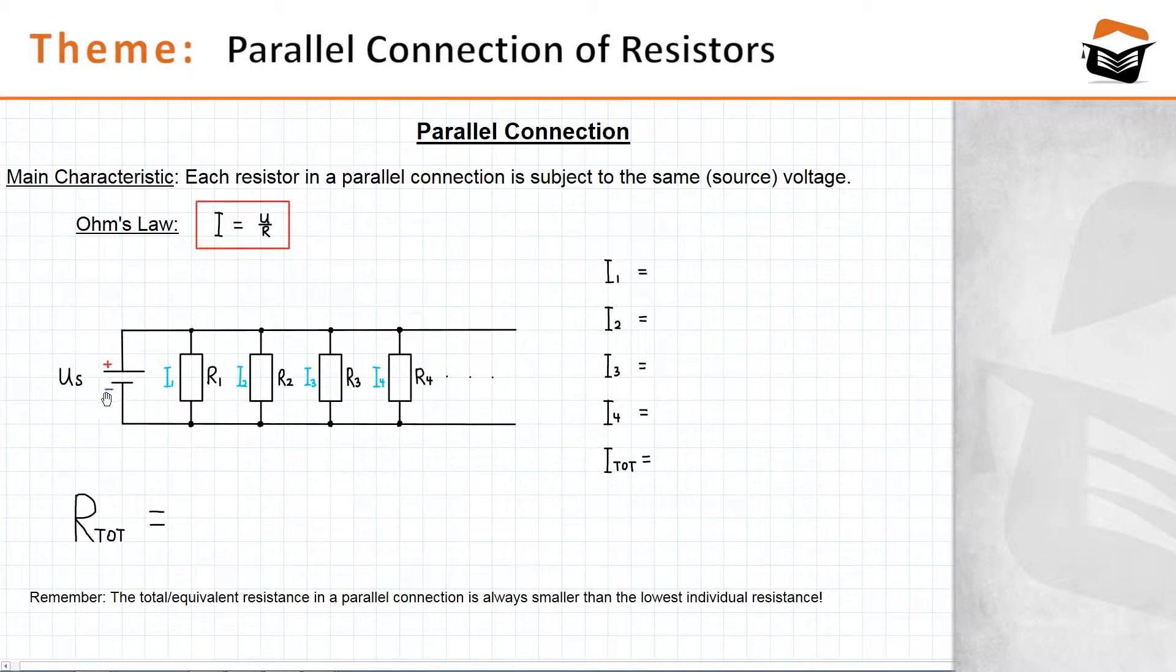It is important to know that each resistor in a parallel connection has the same source voltage applied to it. That's simply because each resistor is more or less directly connected to the source voltage. In this regard, each resistor is also subject to Ohm's law, whereby the current is the ratio of the voltage, which is constant for each resistor, and the resistance of each individual resistor.